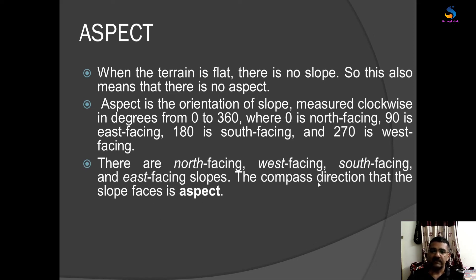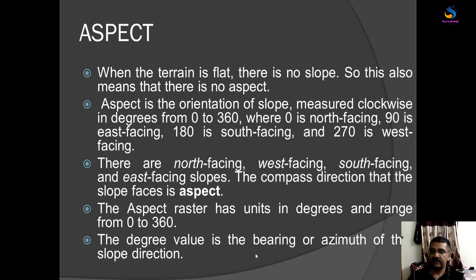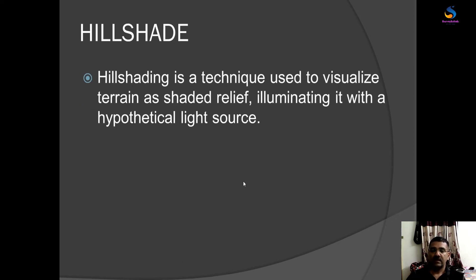There are north facing, west facing, south facing, and east facing slopes. The compass direction that the slope faces is called the aspect. So aspect is the direction the slope is facing. The aspect raster has units in degrees and ranges from 0 to 360. When we create aspect, it generates pixel values from 0 to 360. The degree value is the bearing or azimuth of the slope direction — when we calculate aspect, the values we get are the bearing or azimuth of the slope direction.